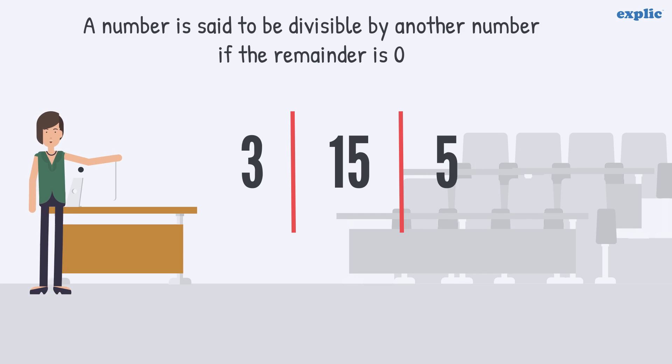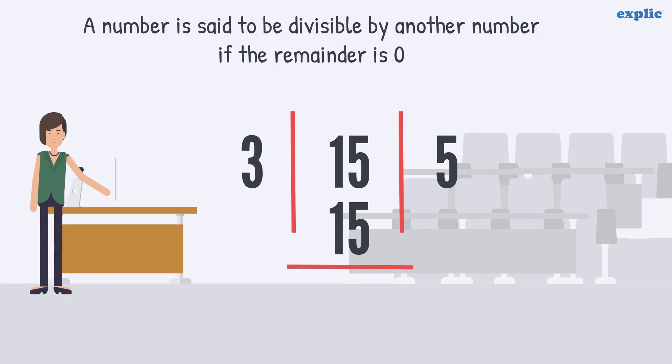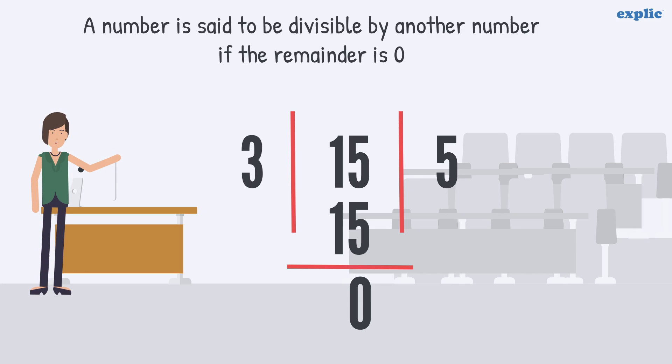For example, if we divide 15 by 3, the remainder is 0. Therefore, 15 is divisible by 3.